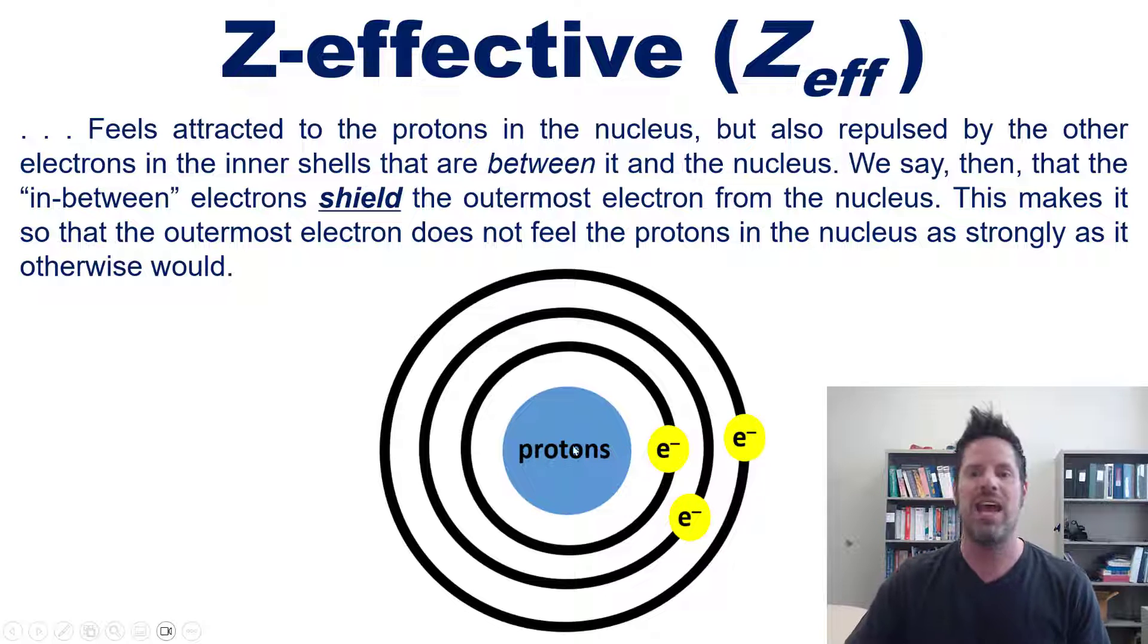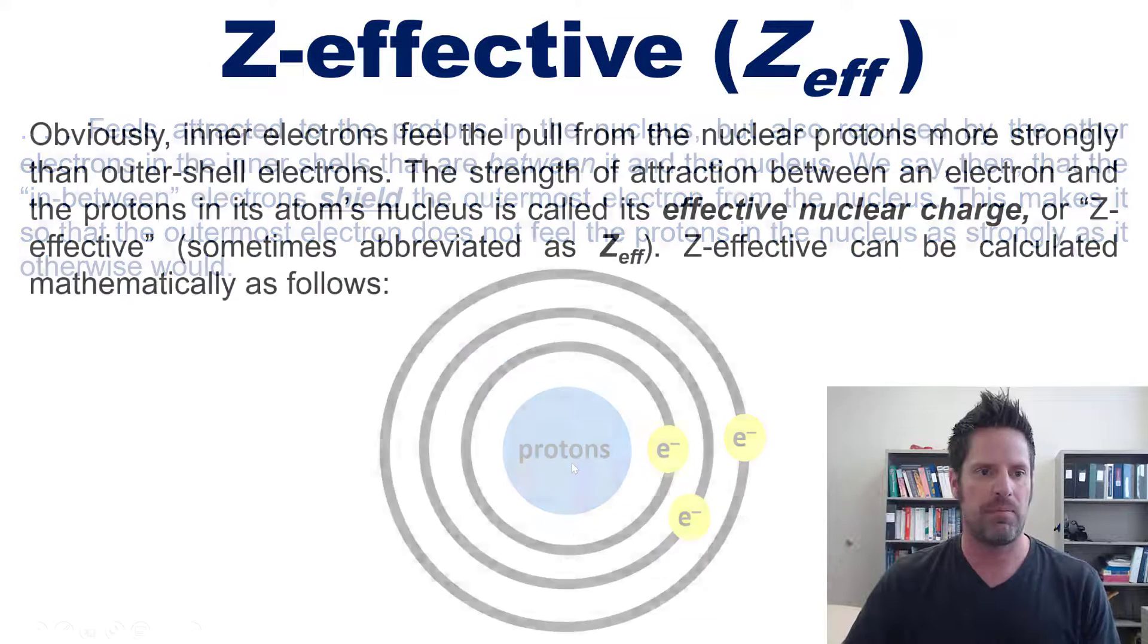We say that the in-between electrons—these ones in lower energy levels or orbitals—shield the outermost electron from its attraction to the protons in the nucleus. This makes it so the outermost electron does not feel the protons in the nucleus as strongly as it otherwise would.